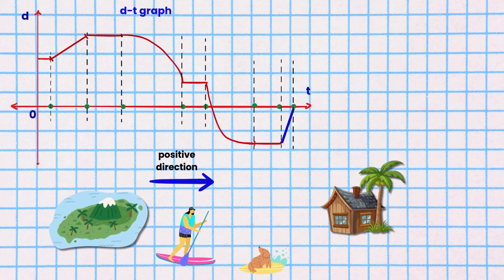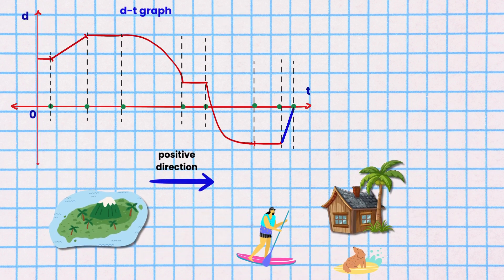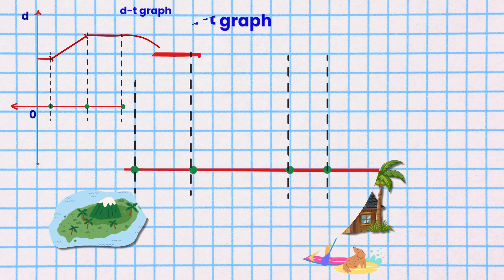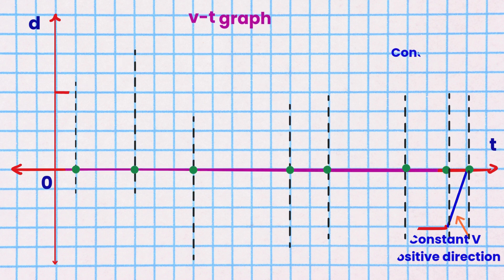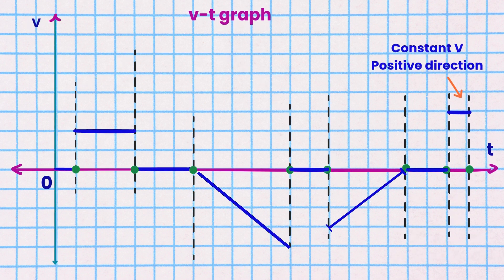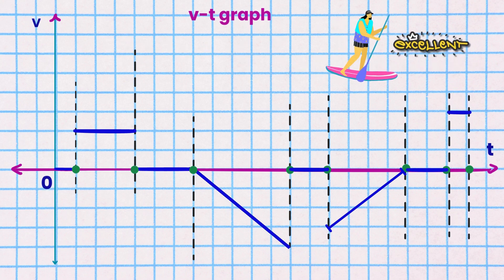Segment 8. Finally, Mole and Electron paddle board to Mole's home at a constant velocity. They paddle board in the positive direction at a constant velocity. It is shown as a horizontal line in the VT graph above the time axis. Here is the completed VT graph.